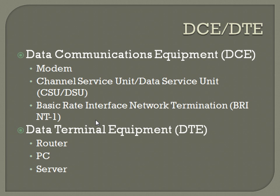DCE and DTE come up periodically throughout the book. DCE is Data Communications Equipment — something like a modem, a CSU-DSU (Channel Service Unit/Data Service Unit). You see that term thrown around a lot if you do any troubleshooting on T1s. If the carrier can loop the smart jack but can't loop the CSU-DSU, it usually means the router itself is down. Another DCE example would be a Basic Rate Interface Network Termination, BRI-NT1, for ISDN. DTE, Data Terminal Equipment, would be like a router, PC, or server.